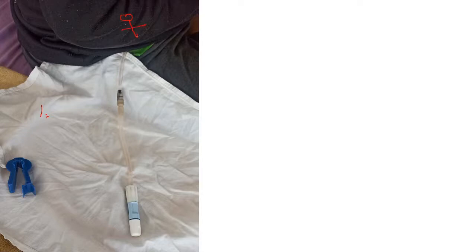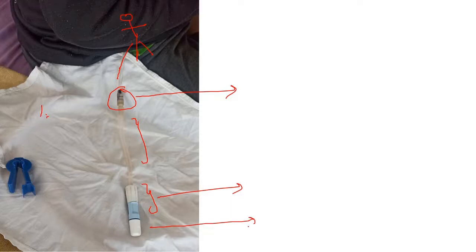This image shows the transfer set connected to the patient — the PD catheter, the titanium adapter, the tube, the twist clamp, and the mini cap. The mini cap has to be changed after every exchange, and its cost is around 30 to 50 rupees in India.